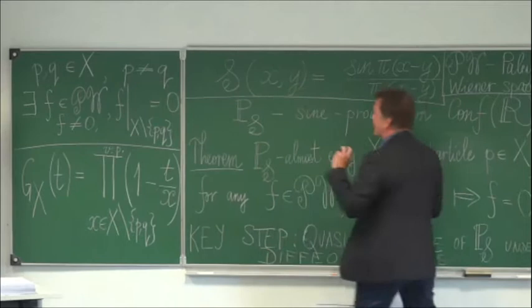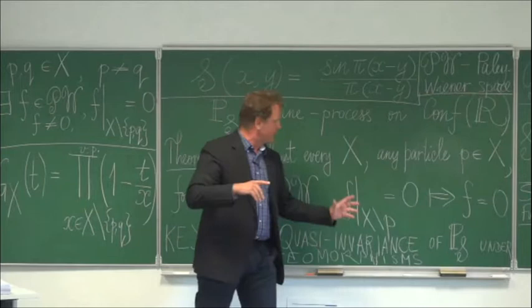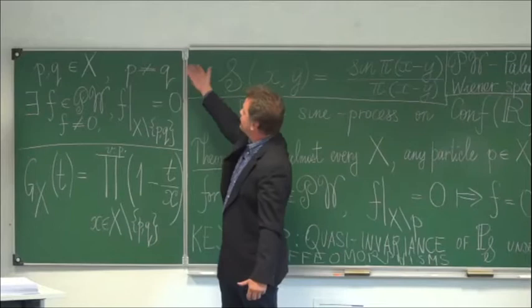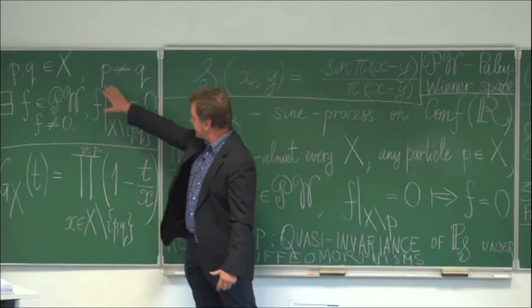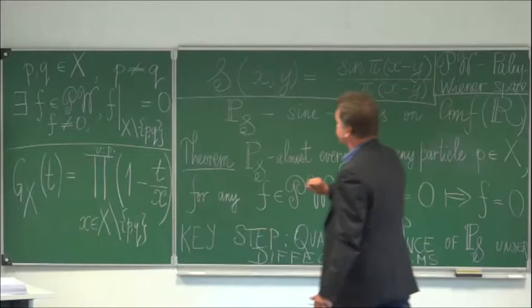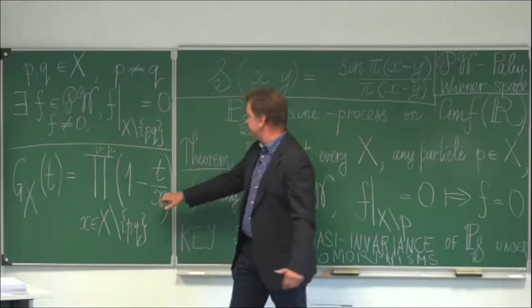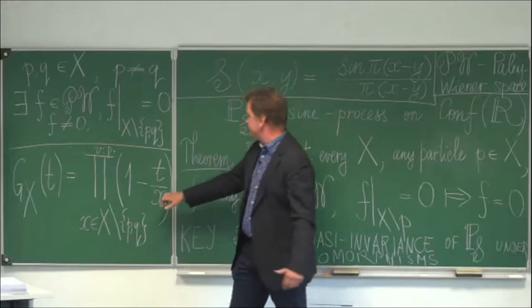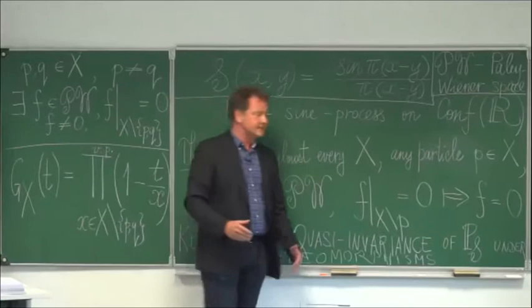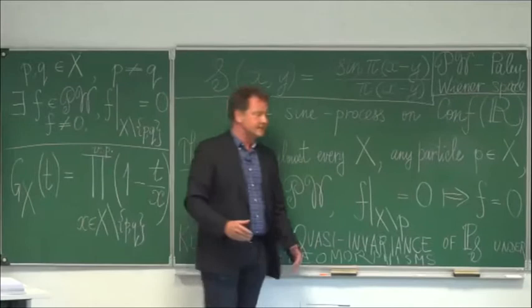Let me also formulate a converse to this result: if two particles are removed from a realization of the sine process, then it is no longer a uniqueness set for the Paley-Wiener space. In fact, a very explicit function can be written — a very explicit infinite product convergent in principal value, where T and X are the particles of the configuration. This function is an entire function, in fact a Paley-Wiener function, and by its very definition it is zero at all the particles except two. What one needs is to prove that it is indeed a Paley-Wiener function.